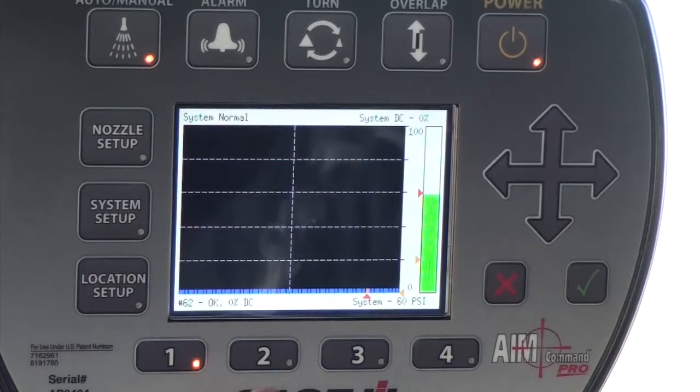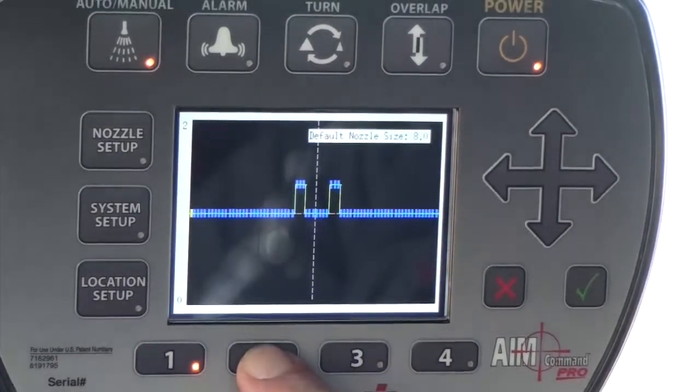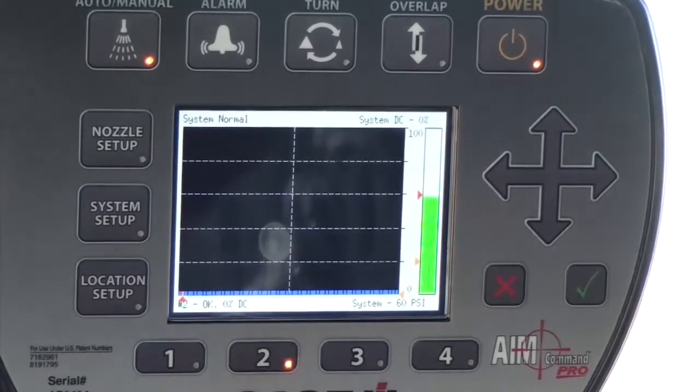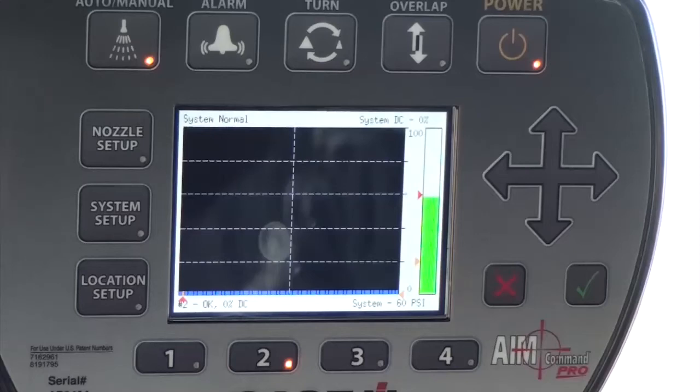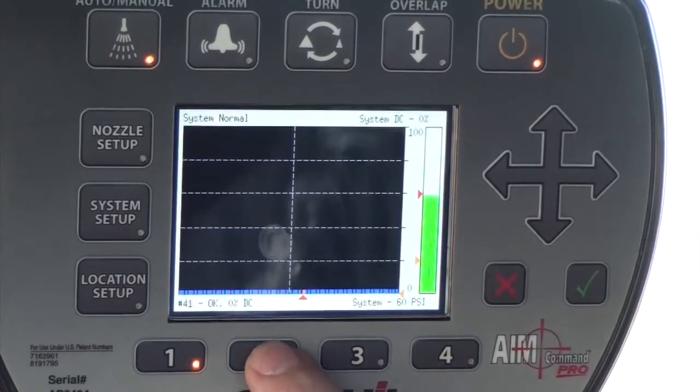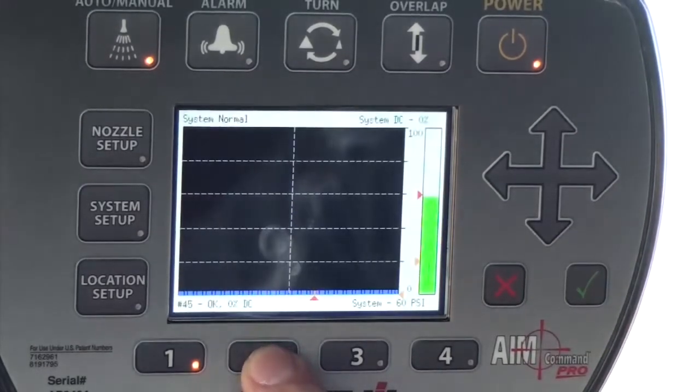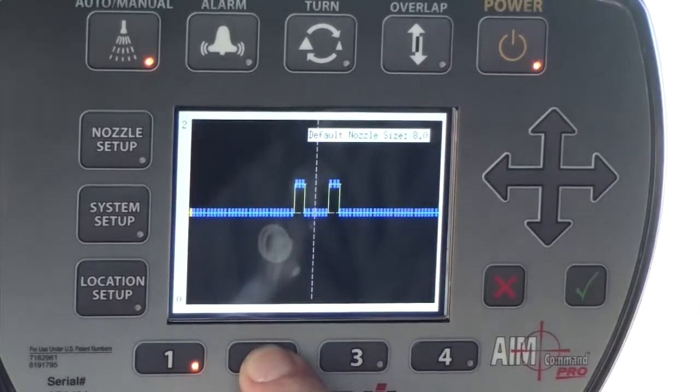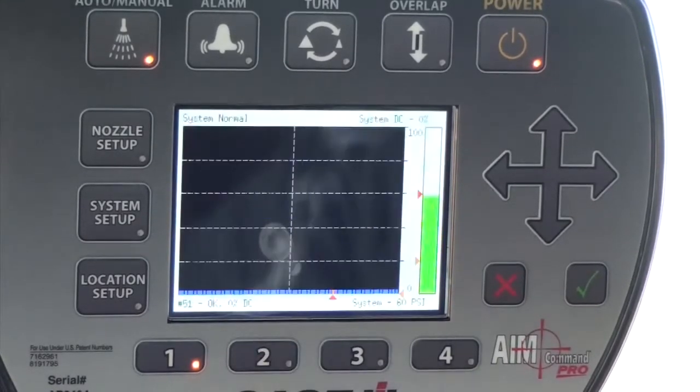The four boom presets are readily available at the bottom of the ProView display. To toggle between any of the four, the operator needs to simply hold the desired button down until the LED on the chosen button illuminates. Also, notice that a brief touch of the button will actually show the configuration that is saved to that button, but will not select it.